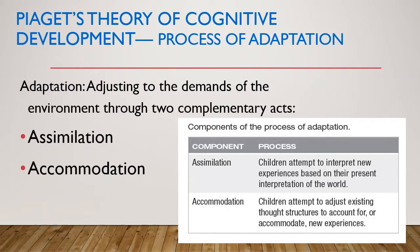Next is Accommodation. Children attempt to adjust existing thought structures to account for new experiences. For example, when a child knows that dogs have four legs, she might automatically believe that all animals with four legs are dogs. When she later learns that cats also have four legs, she will undergo a process of accommodation in which her existing scheme of dogs will change, and she will develop a new scheme for cats.